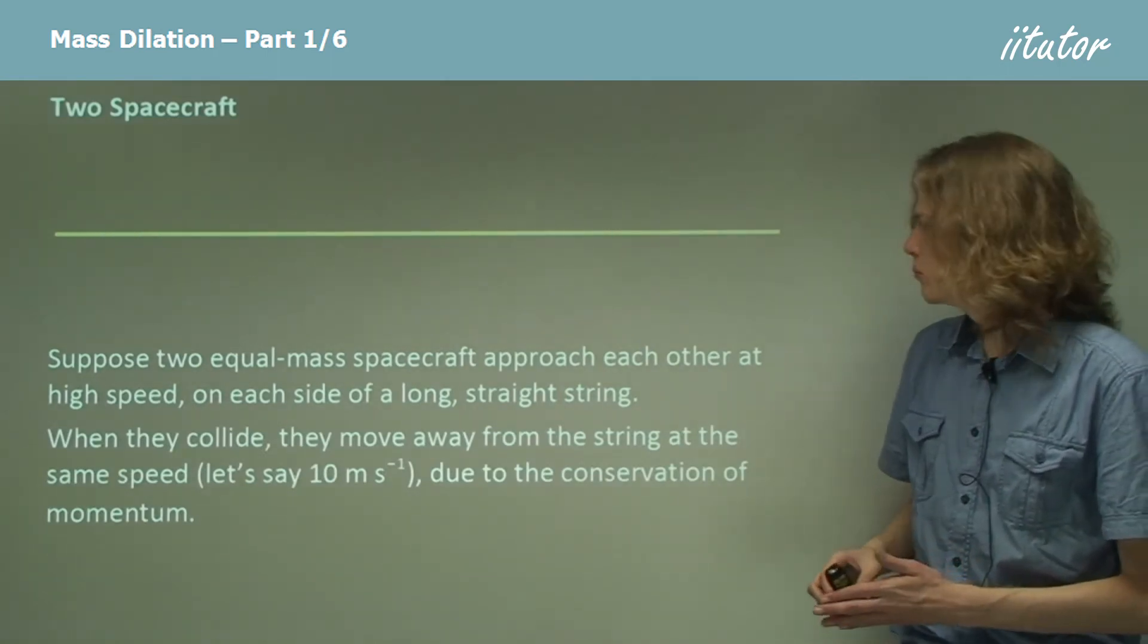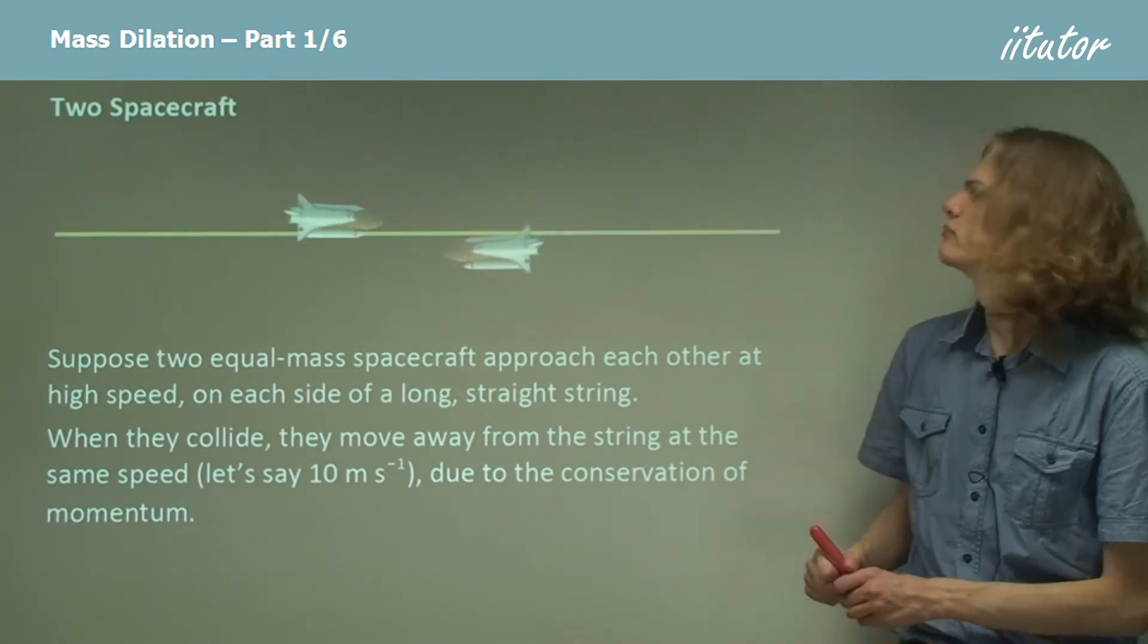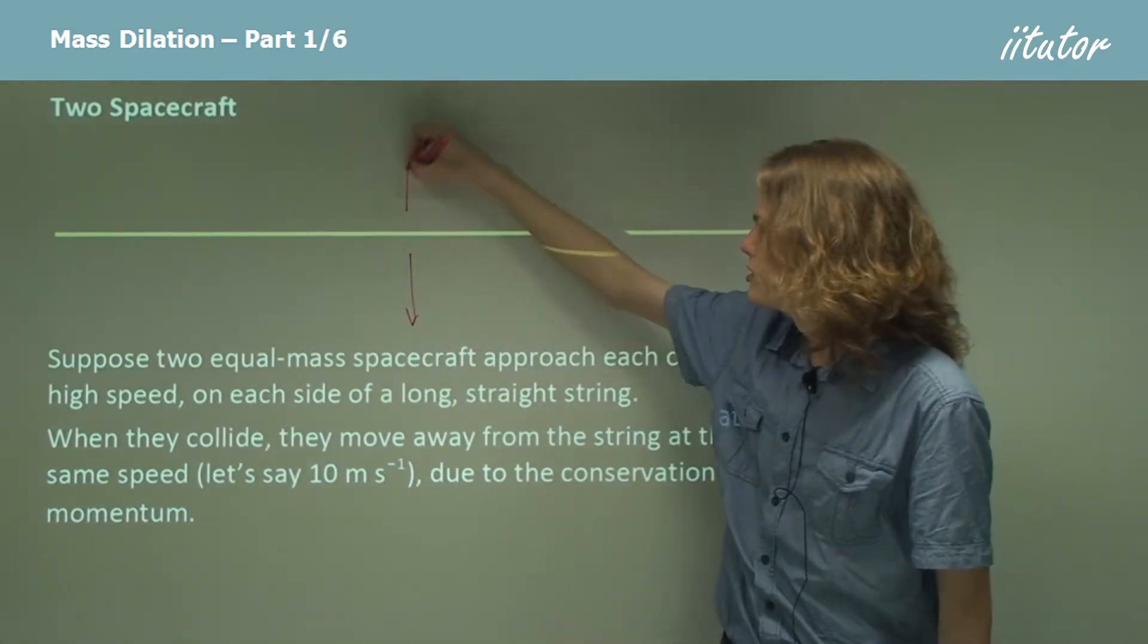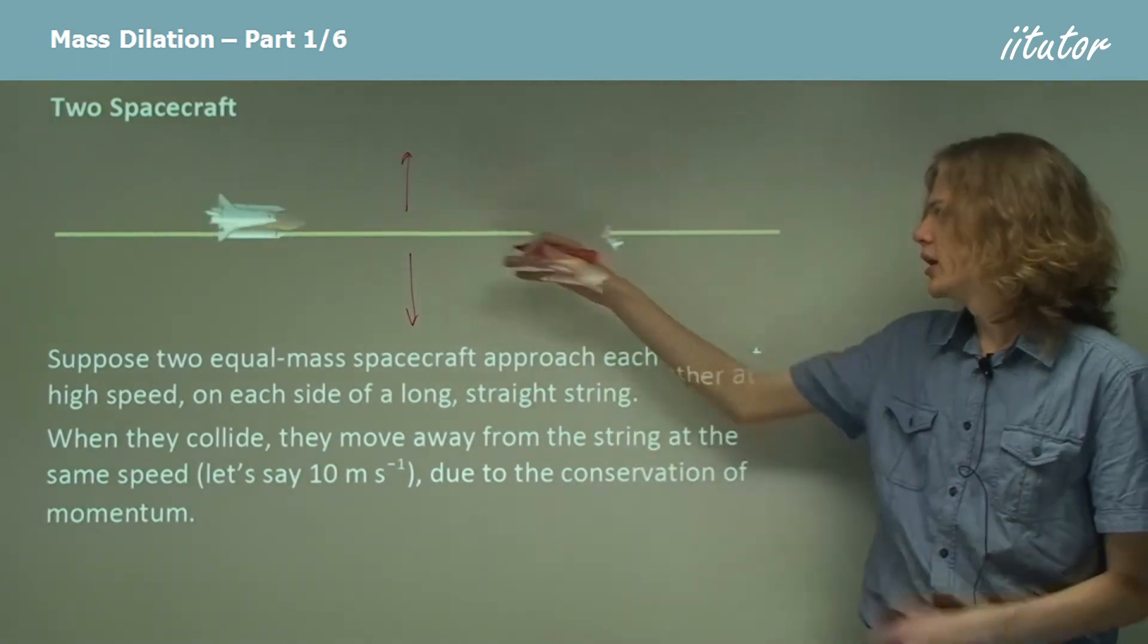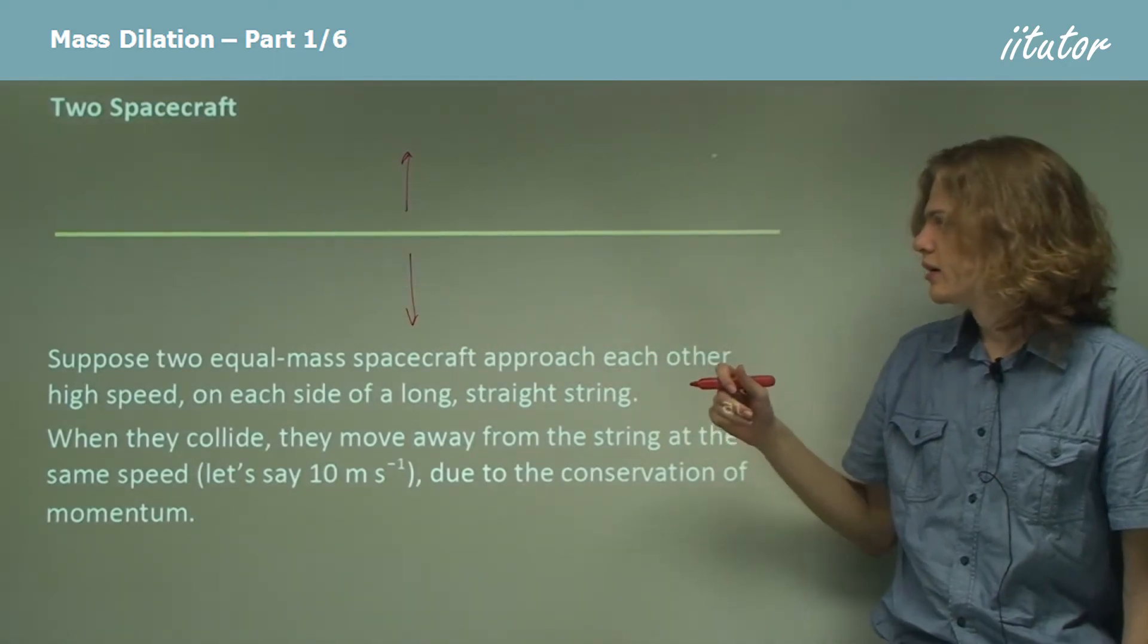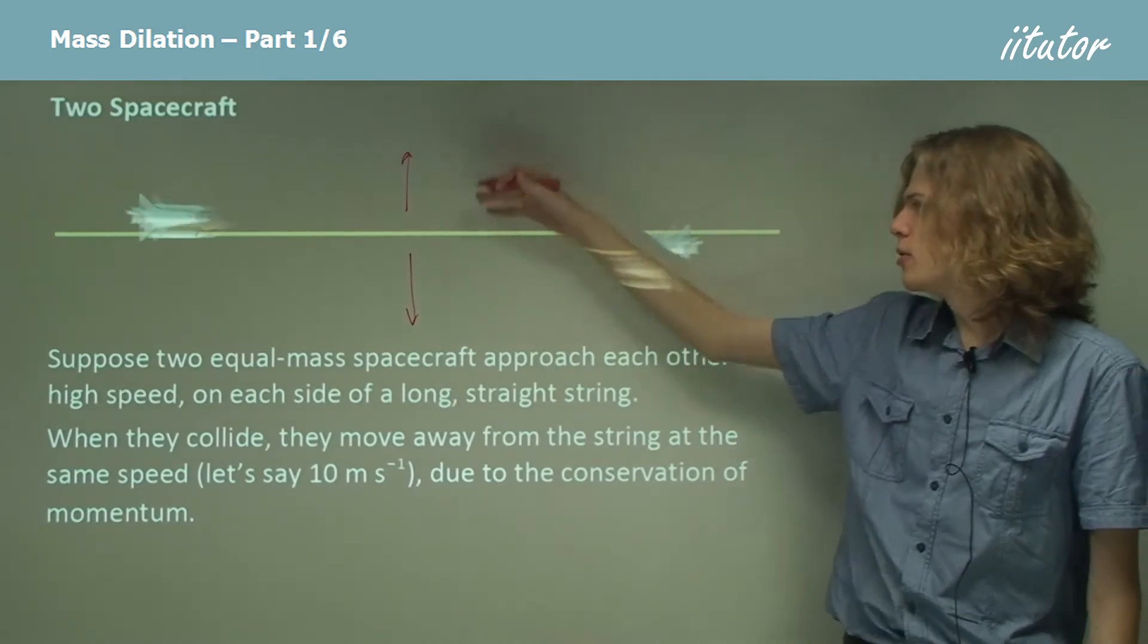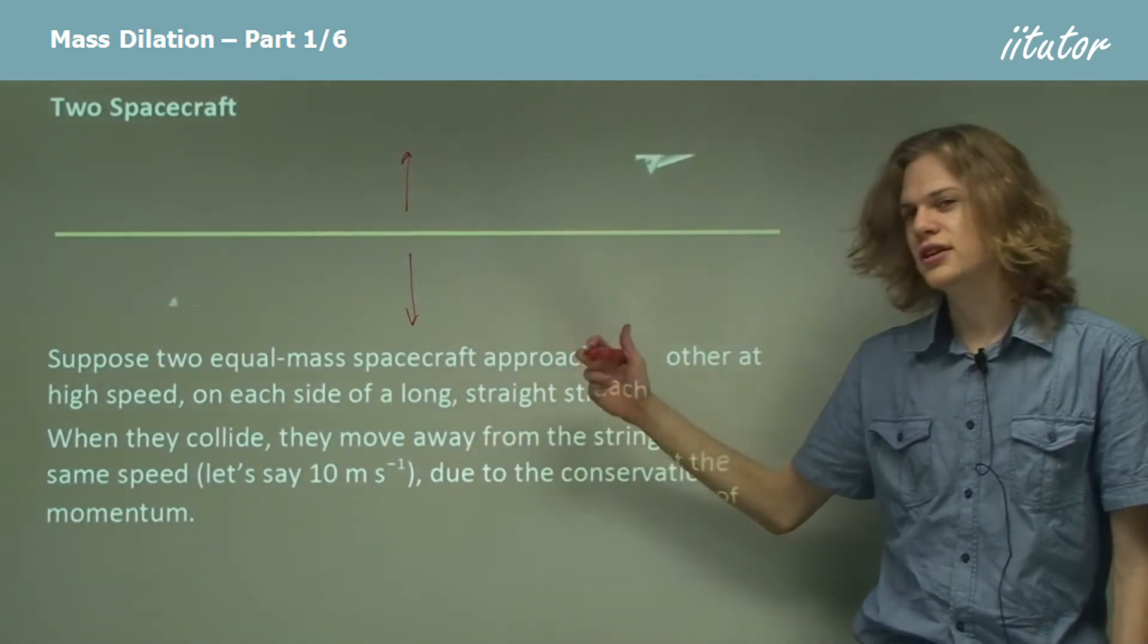Now when they collide, we can see that they start moving away from our line in the middle. So it means that after the collision, each one of them has a component of motion in the y direction. And of course, if we conserve momentum, then the component of motion will have to be the same for both. We can say that it's 10 meters per second.